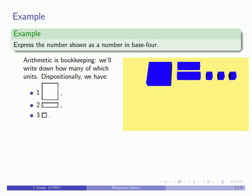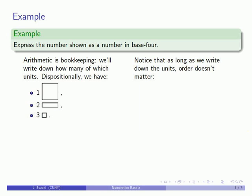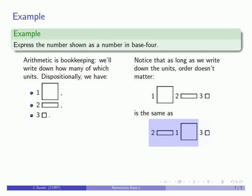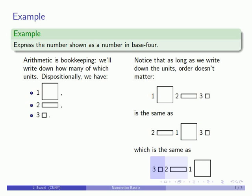And one of the advantages to dispositional notation is that as long as we write down the units the order doesn't matter. One big thing 2 medium 3 small is the same as 2 medium 1 big 3 small. And for that matter it's the same as 3 small 2 medium 1 big. Dispositional notation order doesn't make a difference because arithmetic is bookkeeping.